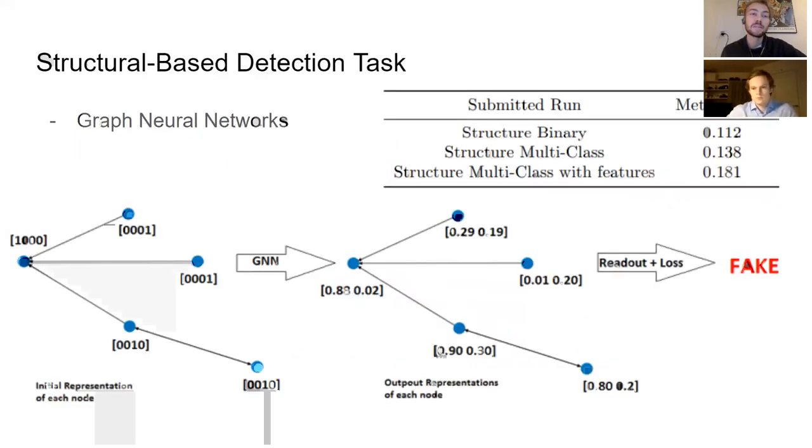For the structural-based detection task, we are using graph neural networks as a classifier, and we do three classification tasks, both multiclass and binary, and with and without additional node features.